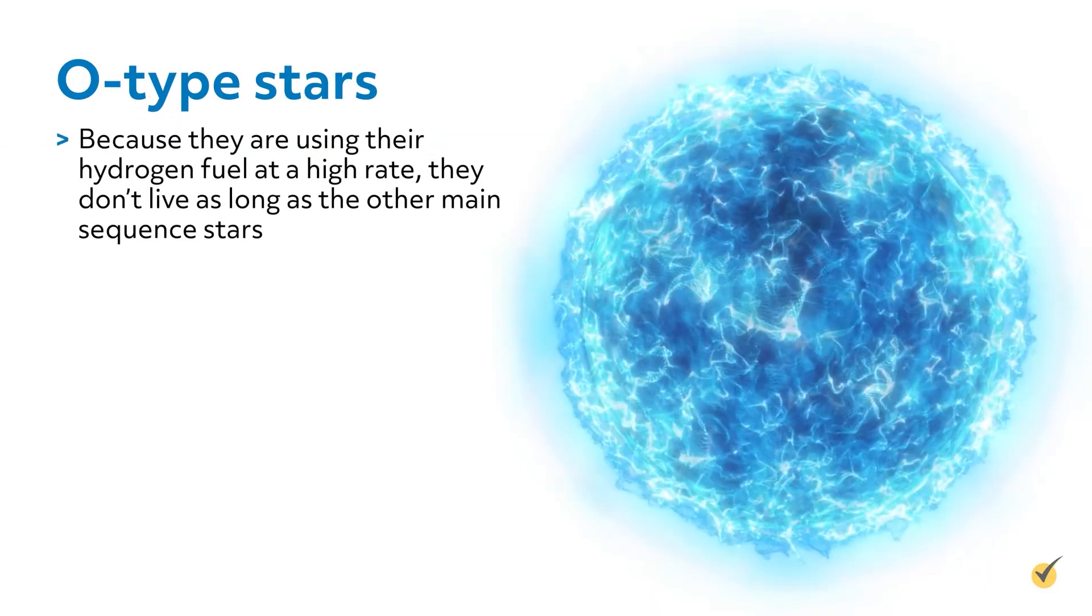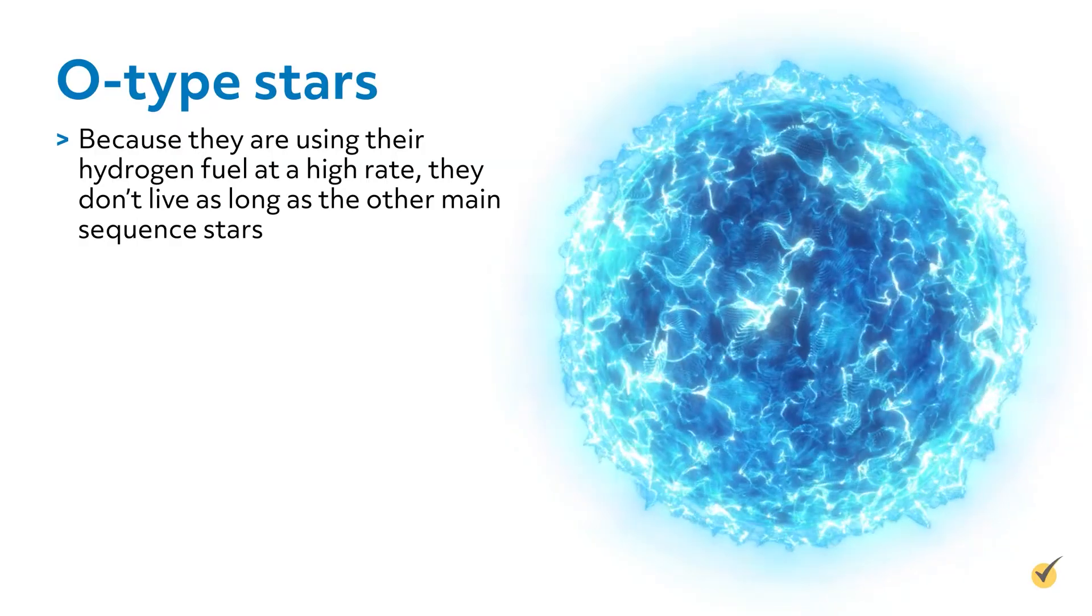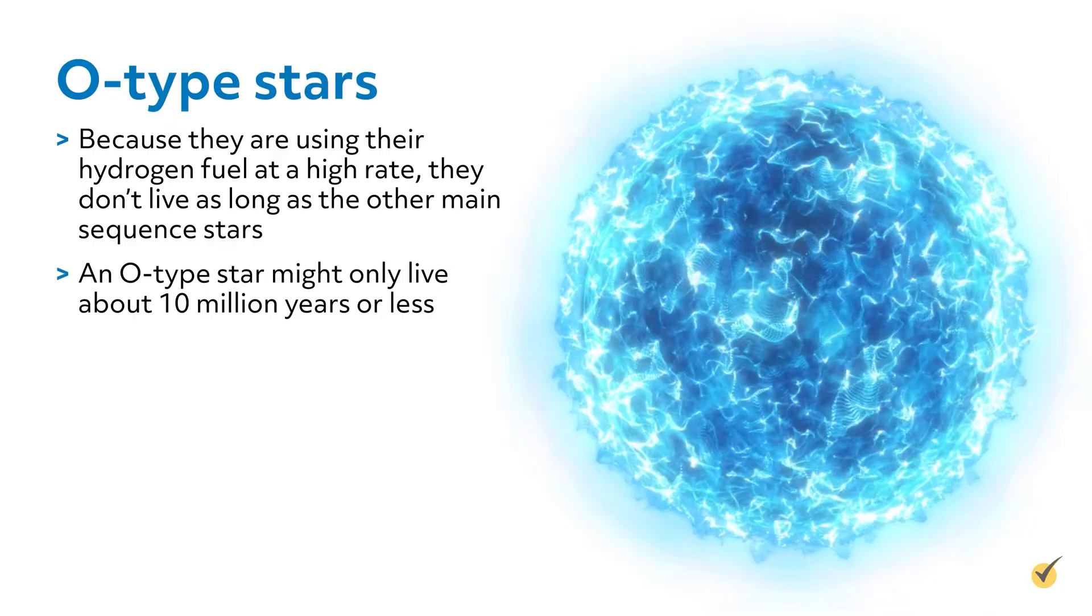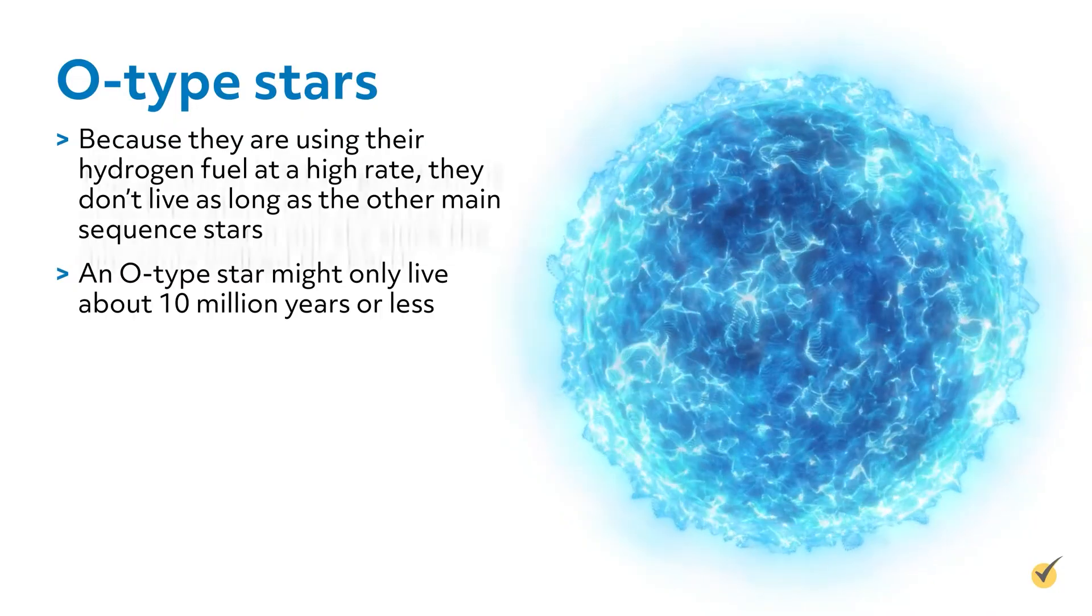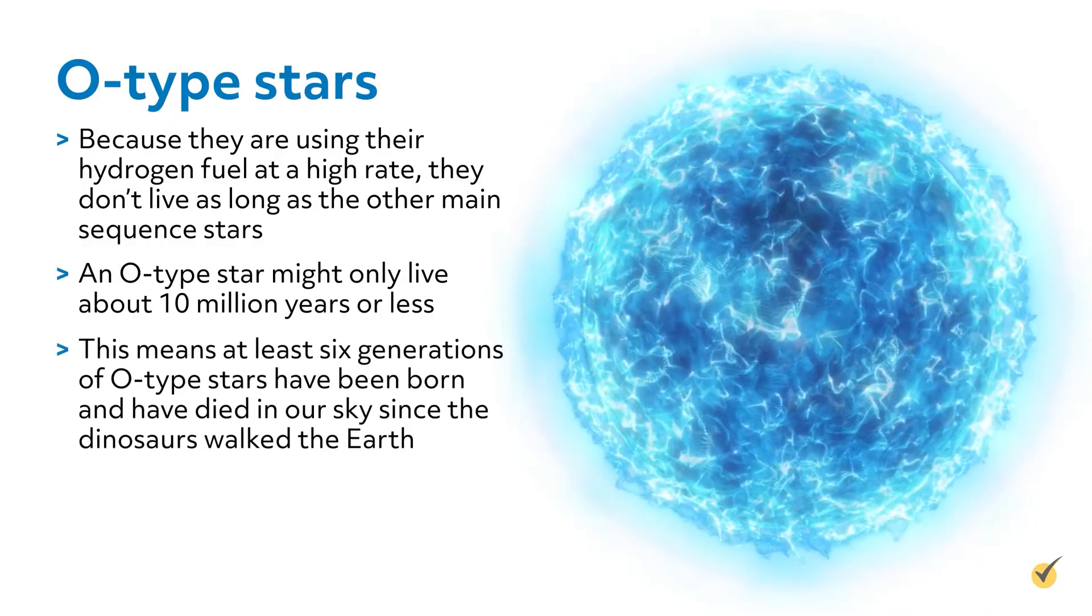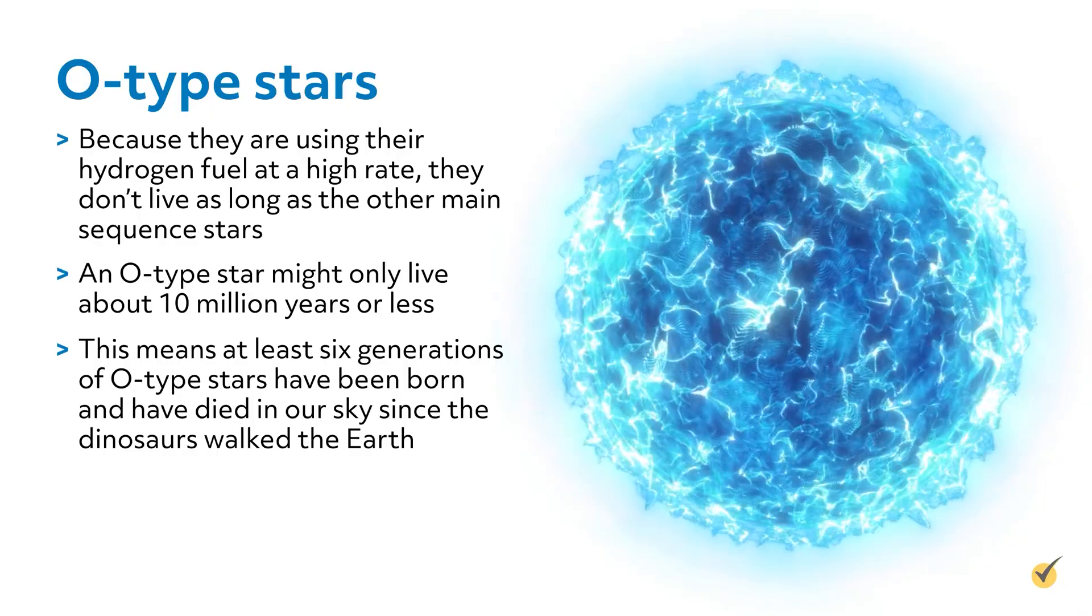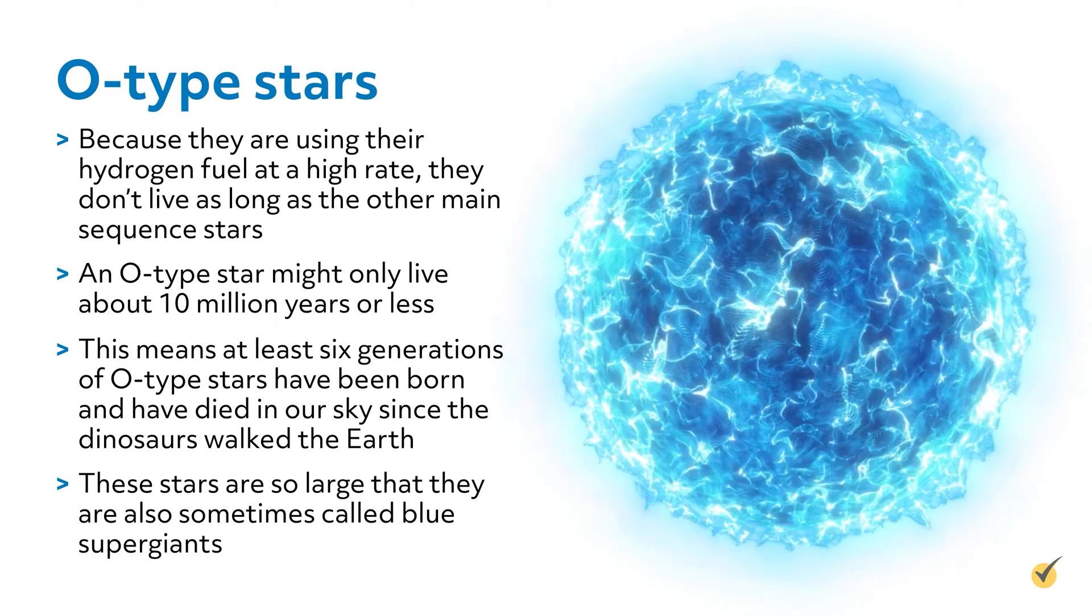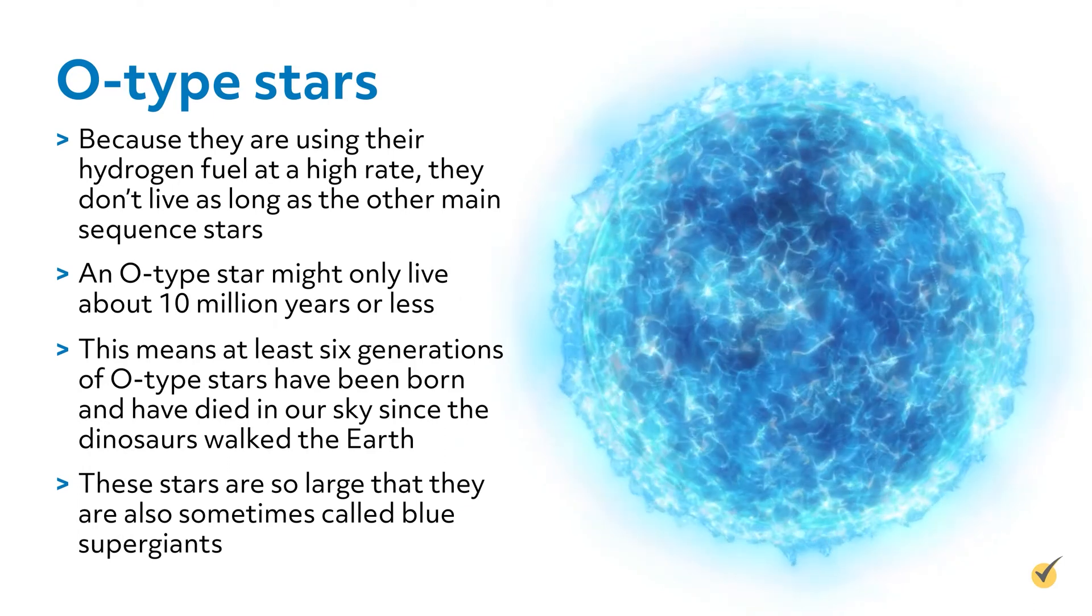Because they're using their hydrogen fuel at a high rate, they don't live as long as the other main sequence stars. An O-type star might only live about 10 million years or less. This means at least six generations of O-type stars have been born and have died in our sky since the dinosaurs walked the Earth. These stars are so large that they're also sometimes called blue supergiants.